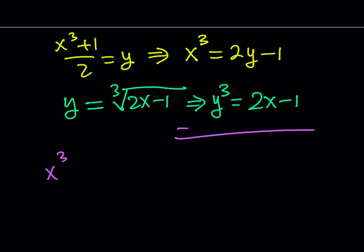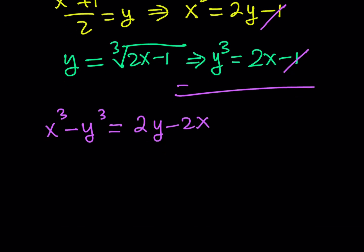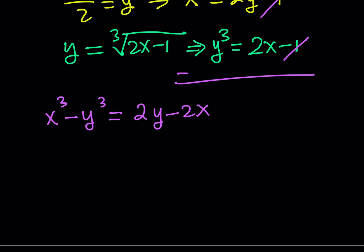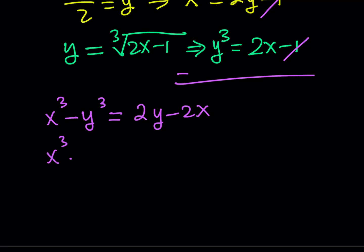So I'll subtract the left hand side. That's going to be x cubed minus y cubed. And the right hand side, notice that when you subtract, the negative 1 cancels out because negative 1 minus negative 1 equals 0. And 2y minus 2x is what you get from there. I'd like to put everything on the same side, and it's going to make factoring easier. Oh, did I say factoring? Absolutely.